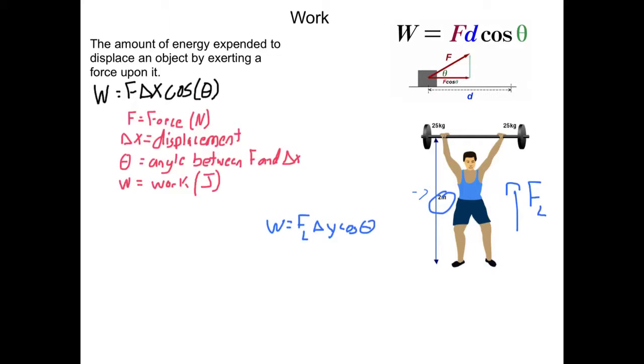No angle between them. So cosine theta, cosine of zero is just one, so that completely goes away. So work equals FL delta y.